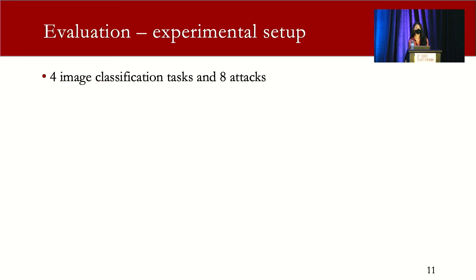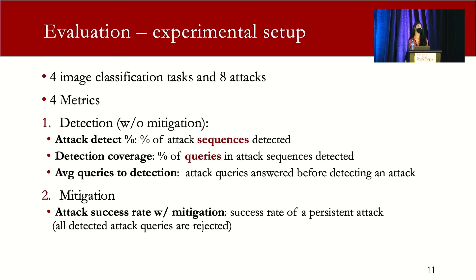We evaluate BlackLight on four different image classification tasks using eight state-of-the-art attacks with four different metrics: three for detection and one for mitigation. For detection, we have attack detection rate — the proportion of attack sequences we detect — detection coverage — the proportion of attack queries in the attack sequence we detect — and average queries to detection — the number of attack queries answered before we detect the attack sequence. For mitigation, we have attack success rate with mitigation, which is the attack success rate of a persistent attack where all detected attack queries are rejected.